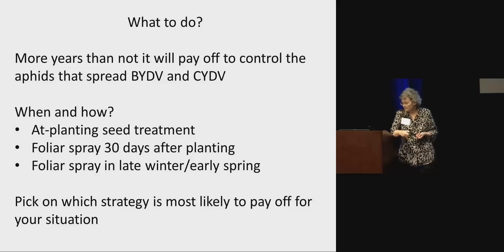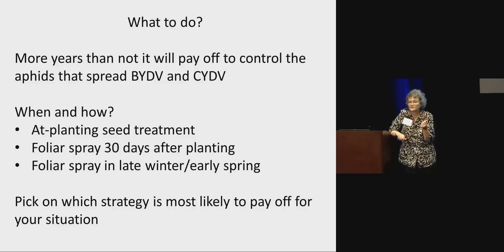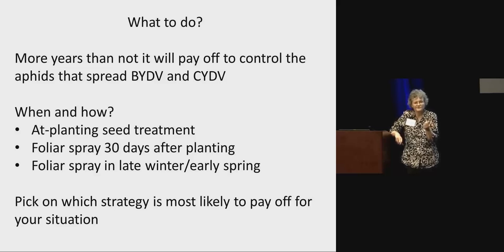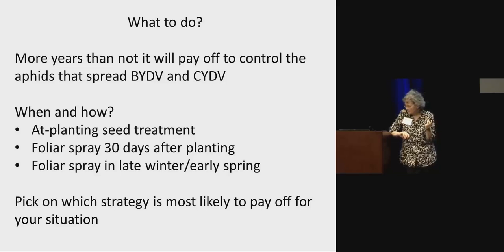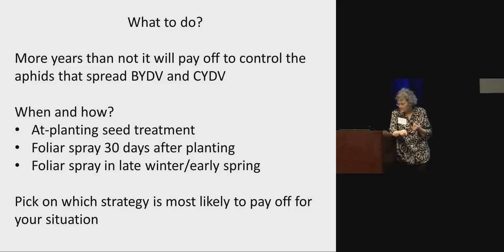More years than not, it's going to pay to control the aphids spreading barley yellow dwarf virus and cereal yellow dwarf virus. There might be years where you don't win and years where you do, but overall you're going to come out further ahead if you try to control those aphids. The three most common ways to think about controlling aphids spreading yellow dwarf viruses are: a seed treatment at planting, a foliar application about 30 days after planting, or a foliar spray in the late winter or early spring before aphids really get going again.